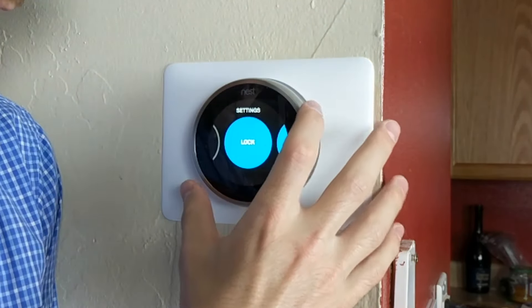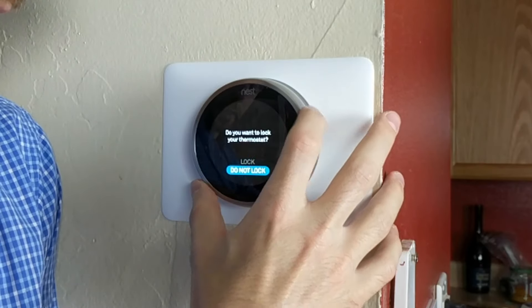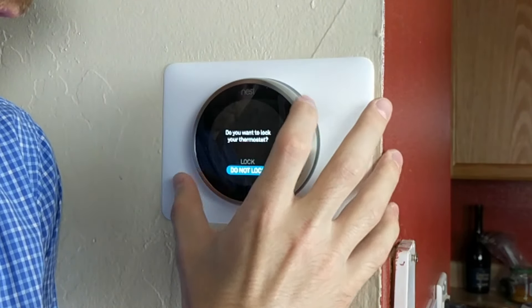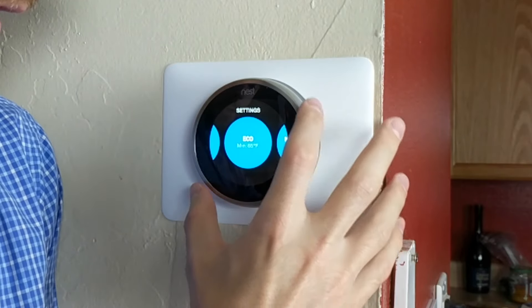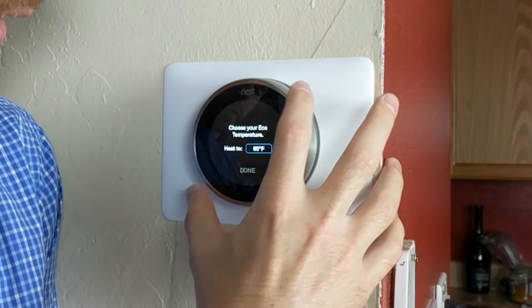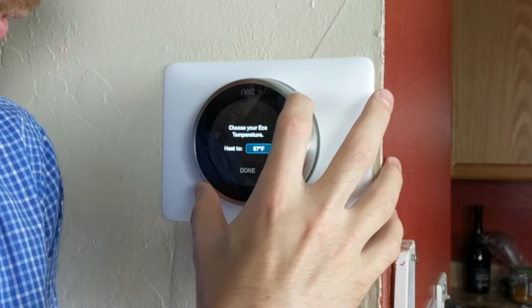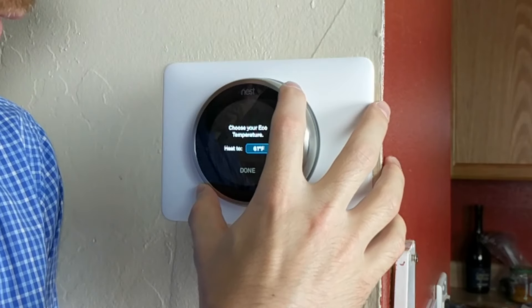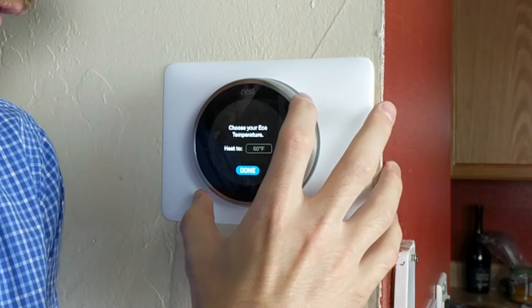Within the settings menu, you have a lock which allows you to lock the thermostat to make sure no other changes are made. We're not going to do that. You can change the eco temperature. We're going to set it to 60 degrees Fahrenheit.